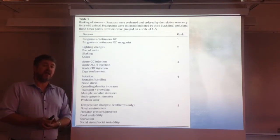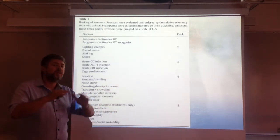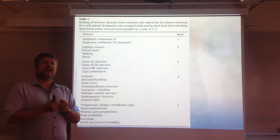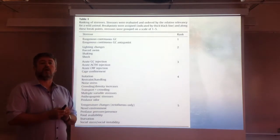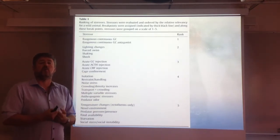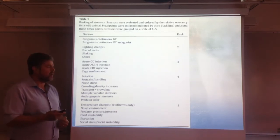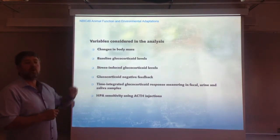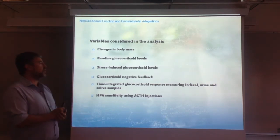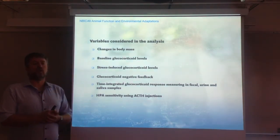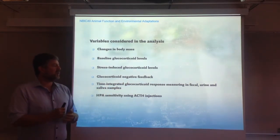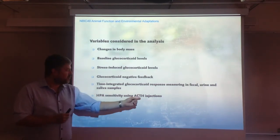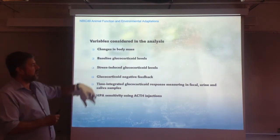The authors looked at a range of studies across multiple species with different stressor models, and tried to find a general response in relation to glucocorticoids — or to determine whether this general response is as clear and remarkable as we would expect. The variables considered include changes in body mass, baseline glucocorticoid levels, stress-induced glucocorticoid levels, negative feedback of the glucocorticoid axis, time-integrated glucocorticoid responses measured in different sample types, and the sensitivity of the HPA axis using ACTH injections.